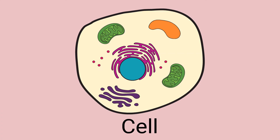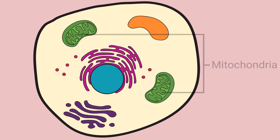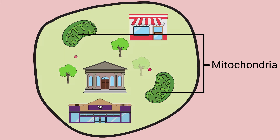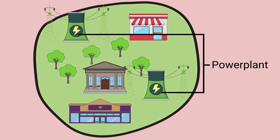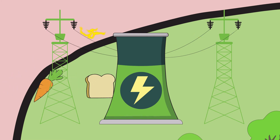Think of each of your cells as being its own little town. In the town, you have a grocery store, businesses, and a power plant. You can think of your mitochondria as the power plants of your cells. They convert oxygen and food into energy so your body can function.